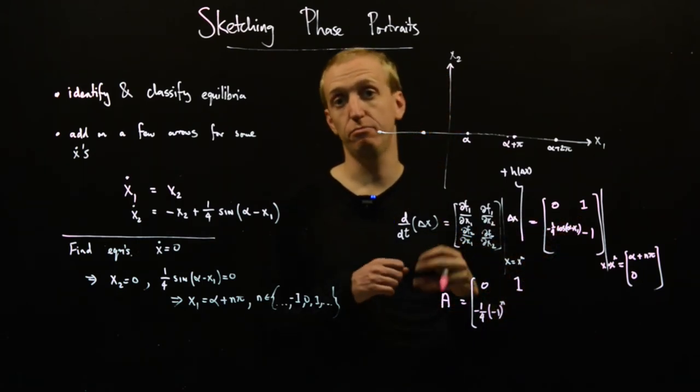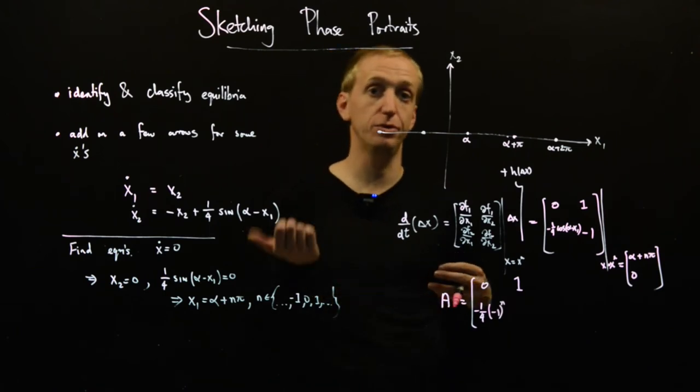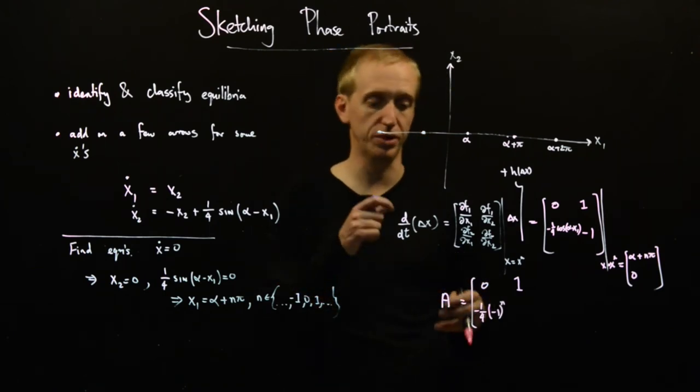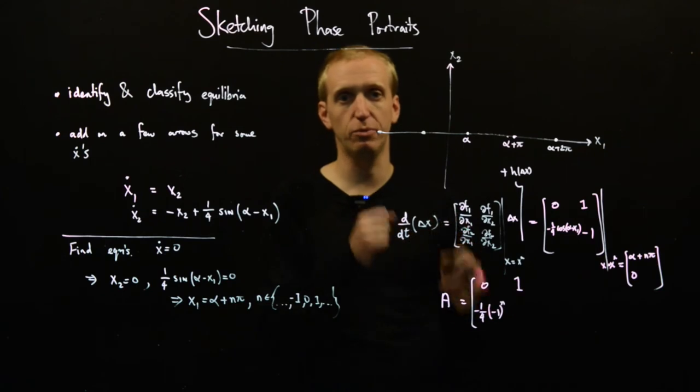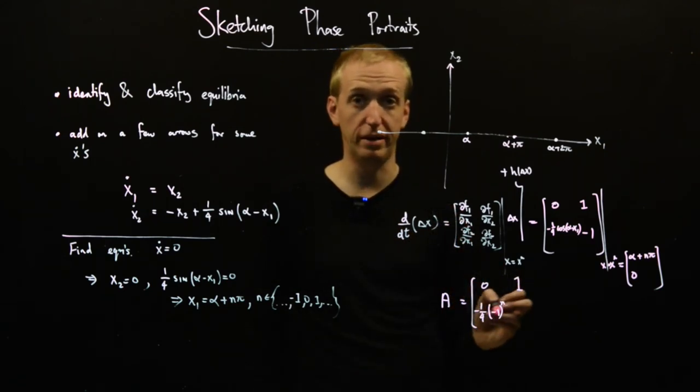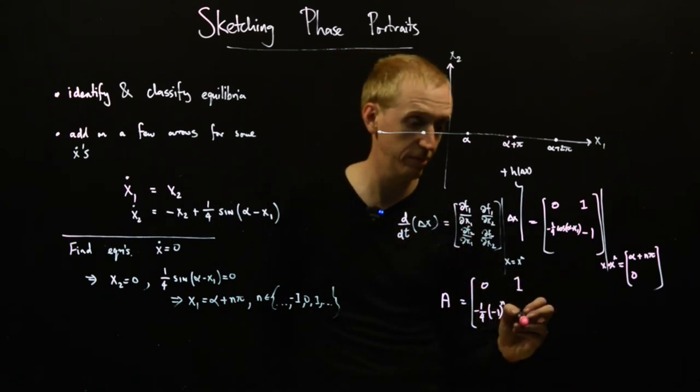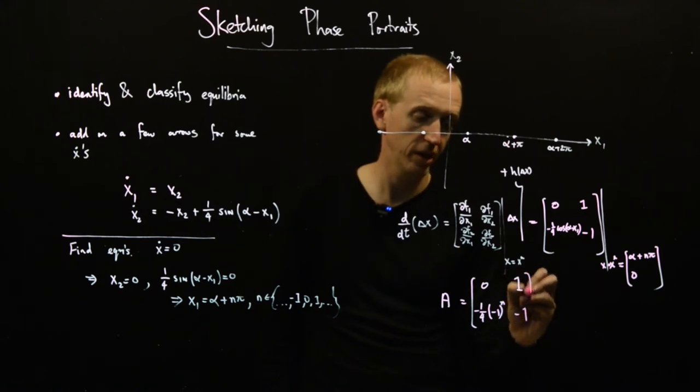So cos of pi is equal to minus one, cos of two pi is equal to plus one. And we automate minus one plus one, minus one plus one. And we can compactly write this like this, and then here we have minus one.